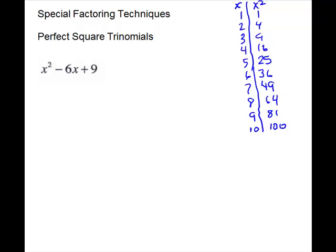On the side, I have put a list of our perfect squares. So in the second column, all of those numbers are perfect squares. The first term is a perfect square, and if the last term is a perfect square, it probably is a perfect square trinomial. Just guess the square roots and then check.